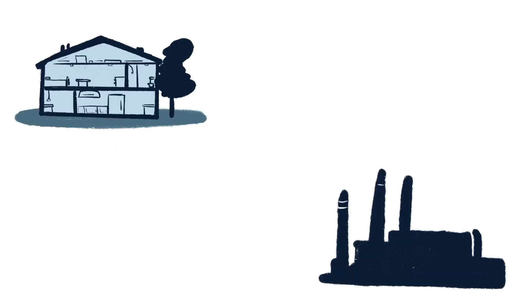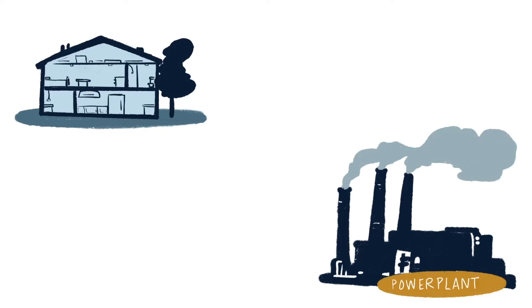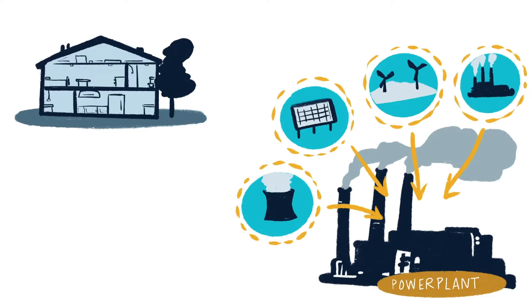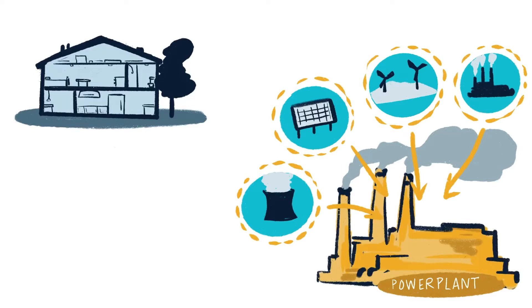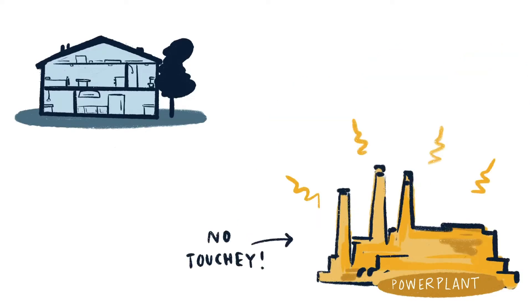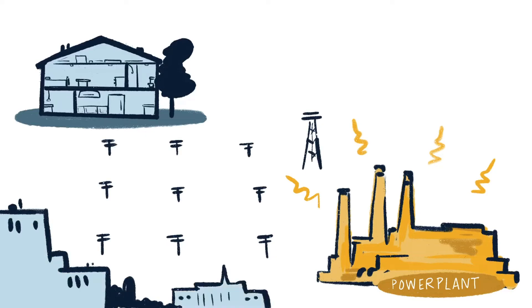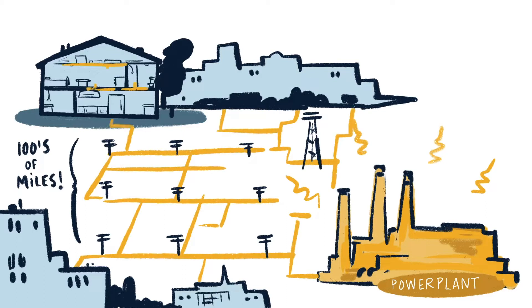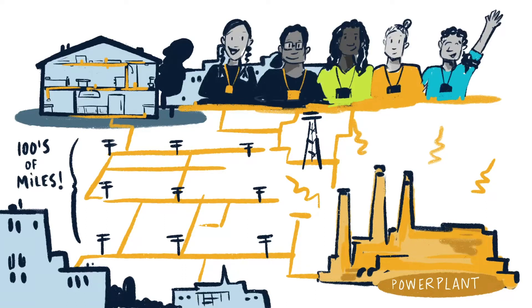It starts in power plants. They can generate electricity using natural gas, solar panels, windmills, coal, or nuclear energy. At this stage, electricity has a really high voltage—touching it could kill you. Electrical engineers help keep power plant workers safe, and they designed the system that carries electricity hundreds of miles through the electrical grid to our cities and homes.